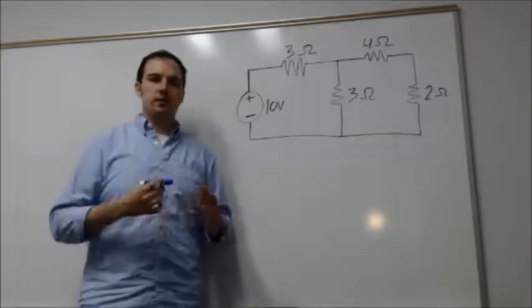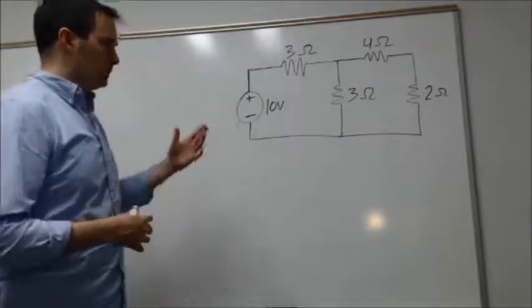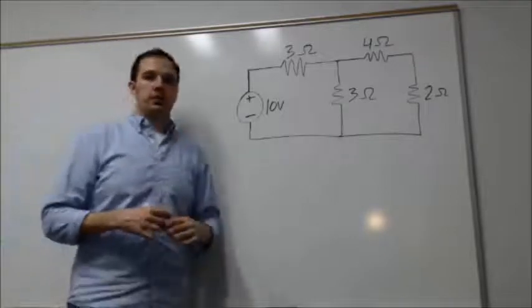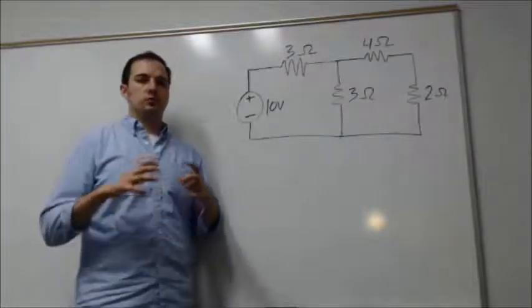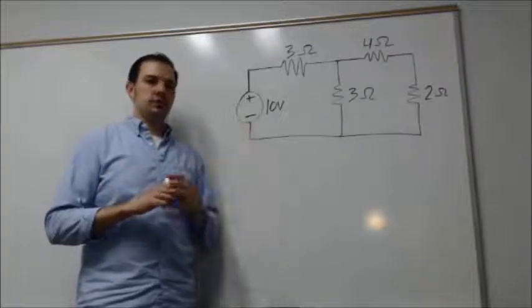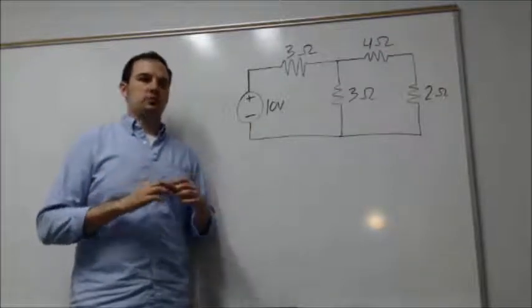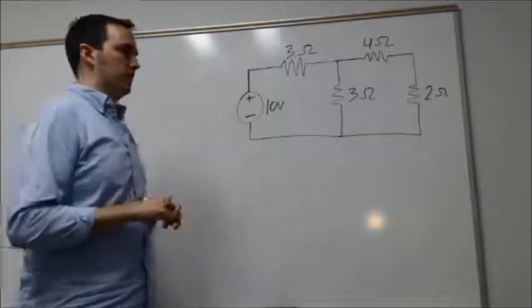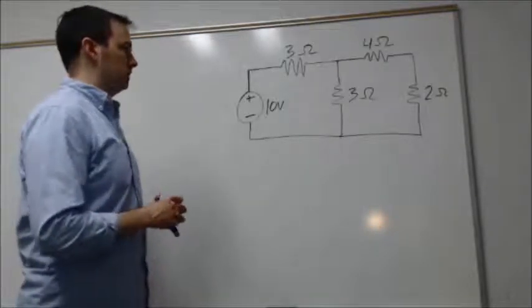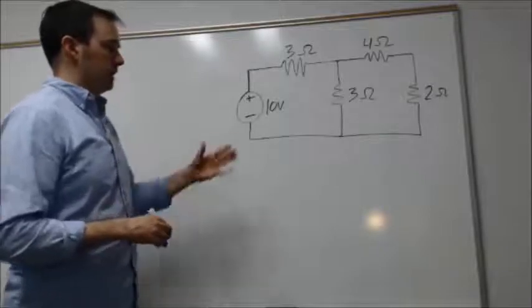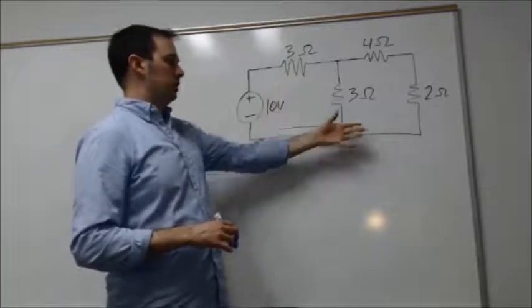I want to go through a quick example here to really hammer home this point of how we can use the current dividers to simplify our lives a little bit. Here I have a network of resistors in circuit with a 10 volt supply.